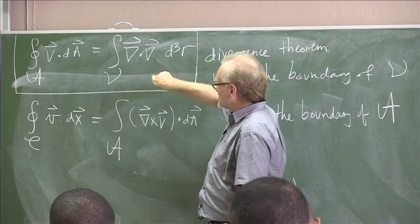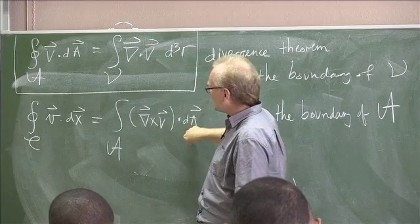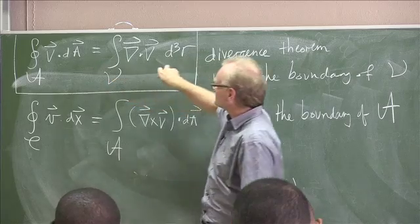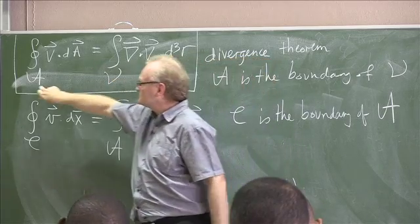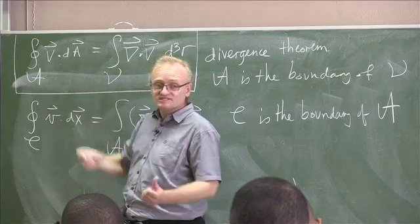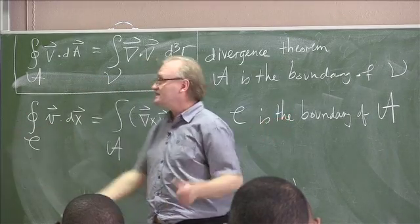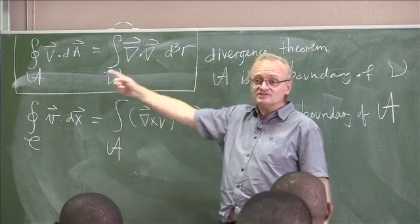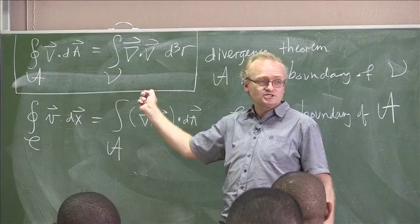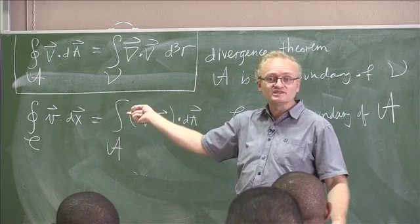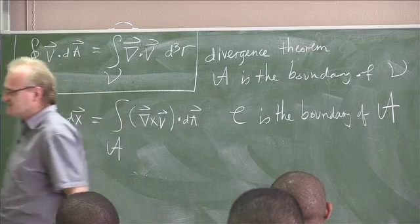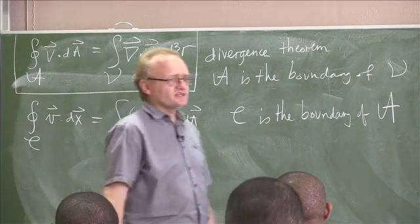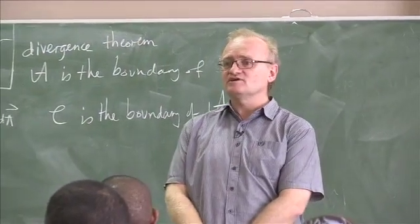The direction of dA comes from the path C. Here again you have a relationship between the directions. Because dA here points outside. But what do you mean by outside? Well you are integrating over the inside. So again the two directions on the two sides of the equation are correlated with each other. So that now gives us the divergence theorem. Are there any questions on either of the integral theorems that we have derived?